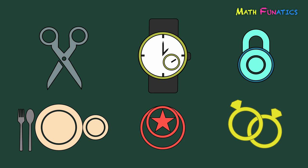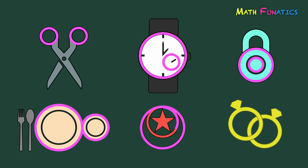Notice that there are circles in each illustration. The pair of scissors has two circular shapes on its handle. The wrist watch has a circular edge and a smaller circle inside it. The body of the padlock is also circular in shape and has a smaller circle in the middle part. The plate in the eating set is circular in shape and touching its edge is a circular saucer. The lantern has a circular edge and a smaller circle on it. And the two overlapping rings are also circular in shape.